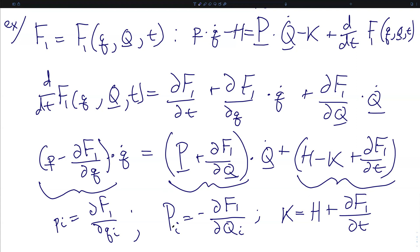Therefore, the i-th original canonical momenta must be equal to the partial of the generating function with respect to the original generalized coordinate. The transformed conjugate momenta must be equal to negative the partial of the generating function with respect to the i-th transformed generalized coordinate. And the new Hamiltonian K must be equal to the original Hamiltonian plus the partial of the generating function with respect to time. This last expression will be the same for all possible generating functions, while the first two depend on the specific form assumed.